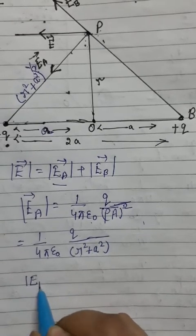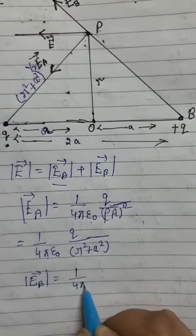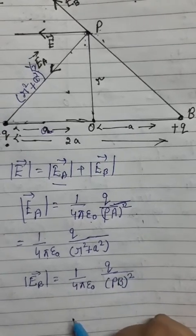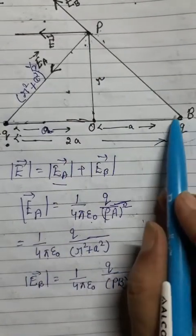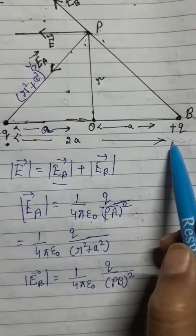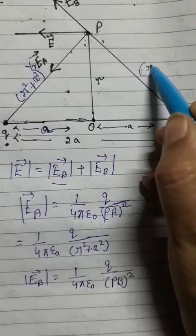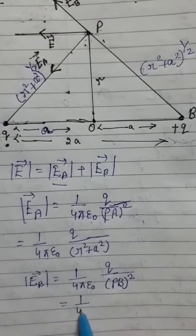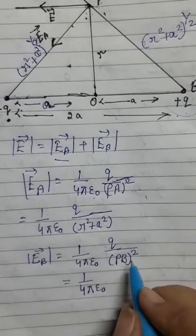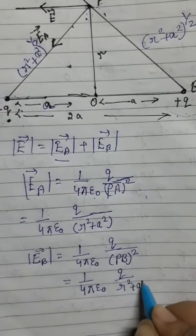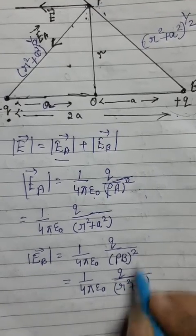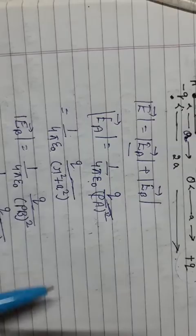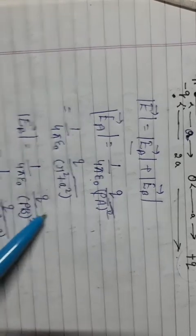Now find EB. The value of EB is 1 upon 4 pi epsilon times q upon PB squared. PB is the distance from the second pole of the dipole to the observation point. Again using Pythagoras' theorem, the value is the same: square root of R squared plus A squared. Therefore EB equals 1 upon 4 pi epsilon times q upon (R squared plus A squared). We can see that EA and EB are equal in magnitude.